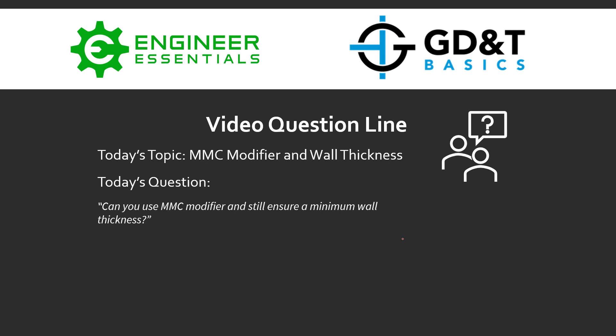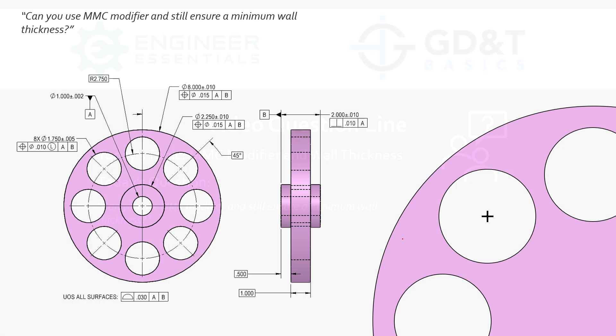So we have this example here. This is a simple example of a sort of flywheel. All these holes in here are just weight reduction holes. They're not assembling, nothing assembles through them.